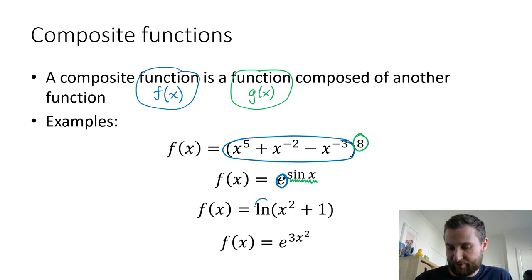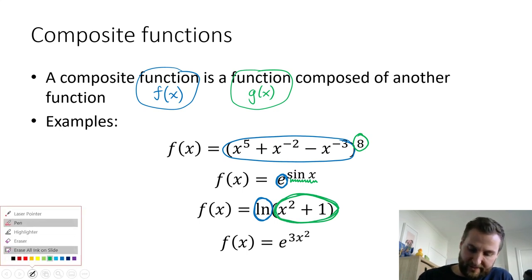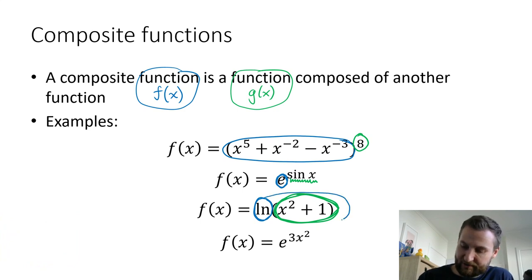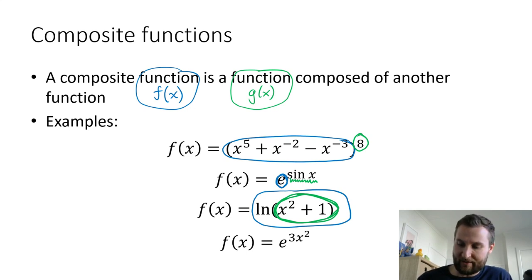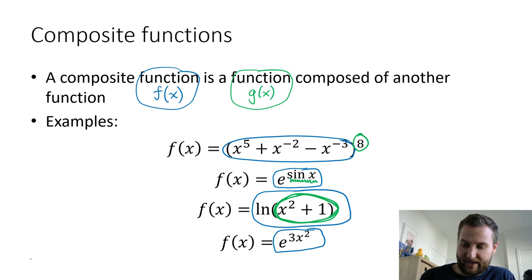My natural log function is my external function, and then it is composed of x squared plus 1. If we're talking about internal and external, this natural log function actually wraps all the way around. Similarly, my e to the x wraps all the way around my sine x. Going in reverse, I have my outside function — that's an exponential — and then I have my internal function, 3x squared.